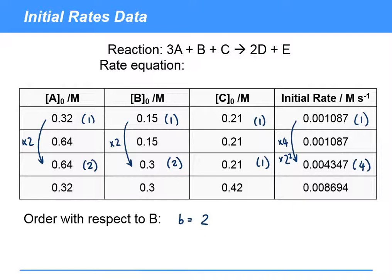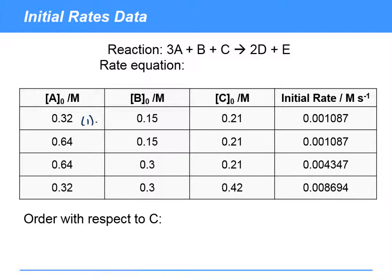Now what about order with respect to C? Well, let's have a look at this third row of the table here. So 0.008694 divided by 0.001087, that's gone up about 8 times.